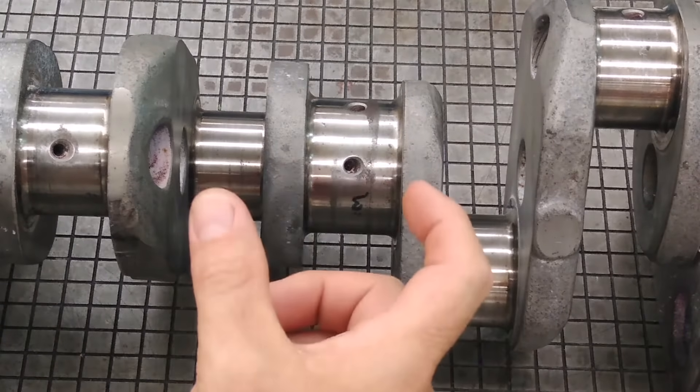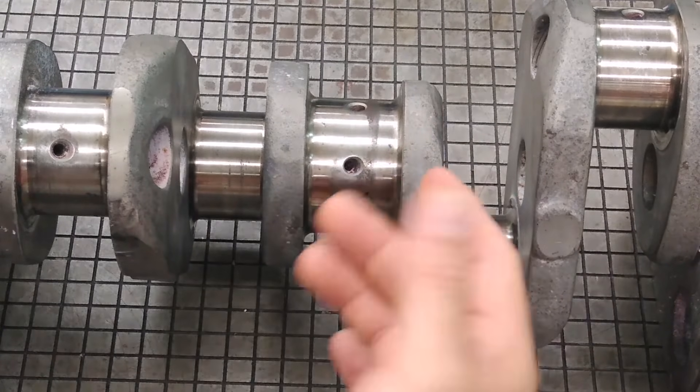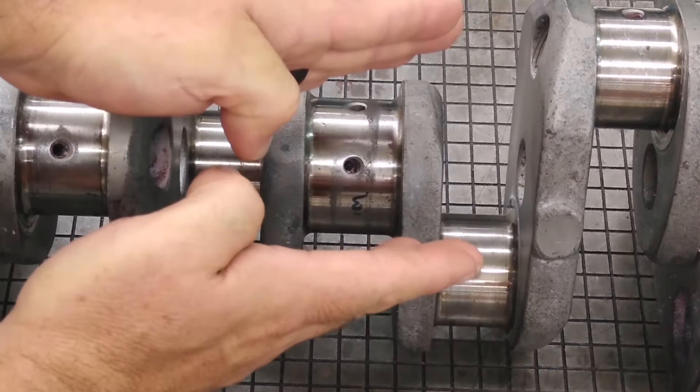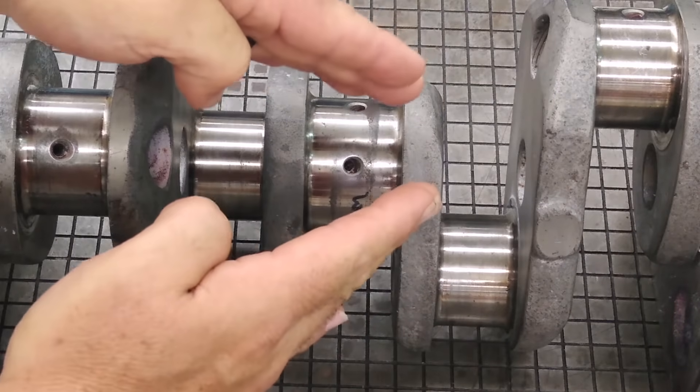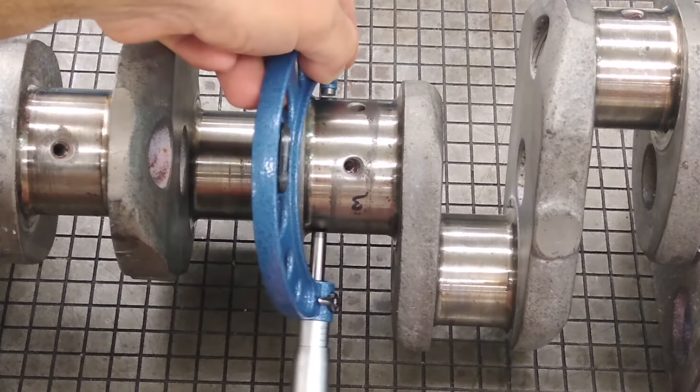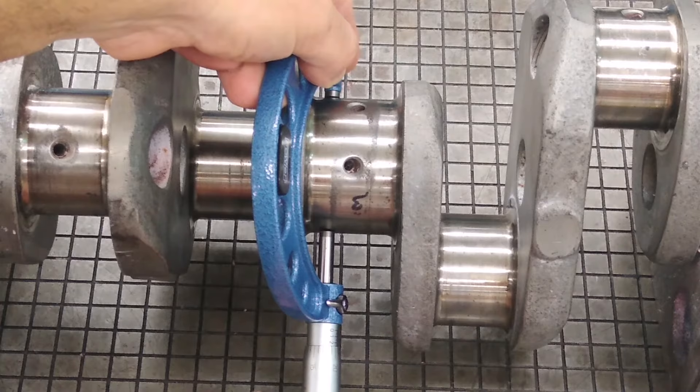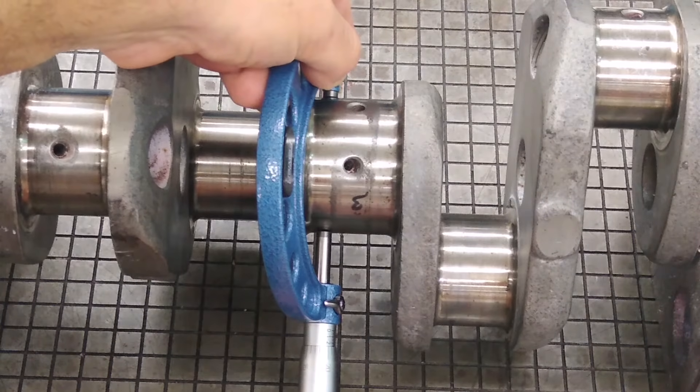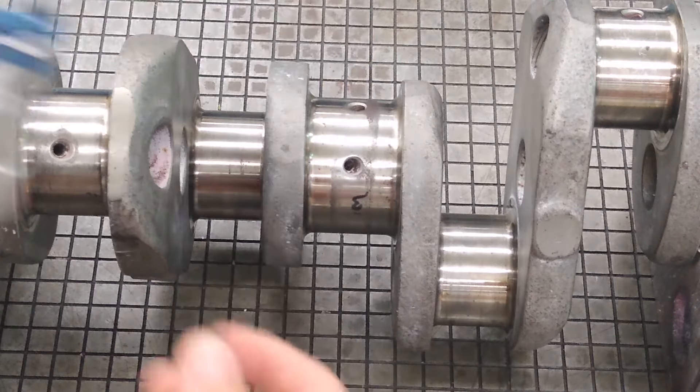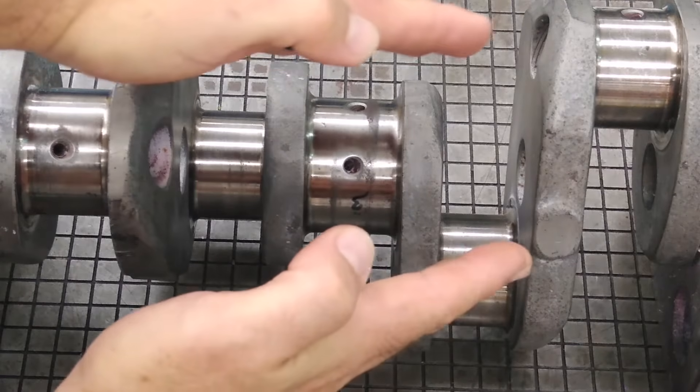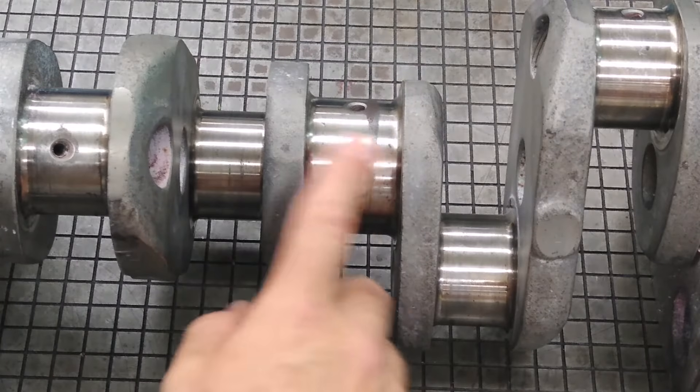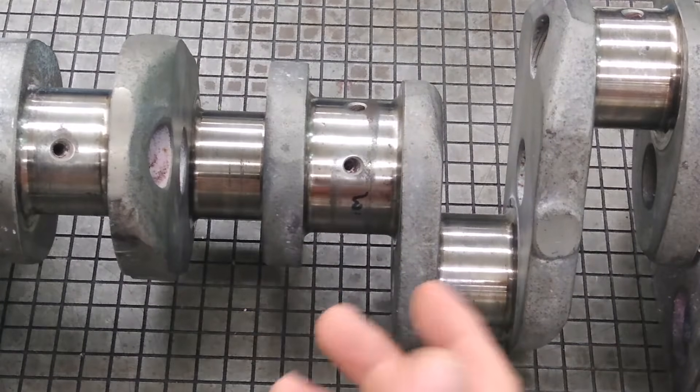To measure taper, something else that you can check for is taper. Taper meaning how far away from parallel the wear patterns are on that crankshaft bearing journal. The way you would do that is you would measure and compare the diameter from one side, let's say the forward end, the forward side of that journal, and compare that to the aft end of that journal. Whatever that difference is from one side to the other will give you an indication of taper or how far away from parallel that journal is. Again, that has its wear limits.